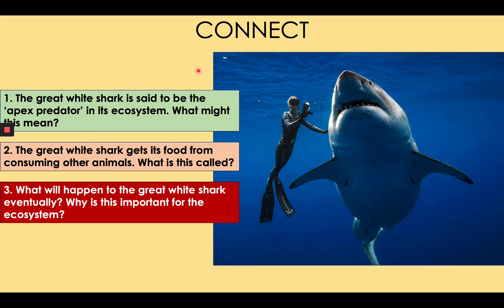Number two: the great white shark gets its food from consuming other animals — what is this called? You should have said the great white shark is a carnivore. It eats other animals, not plants.